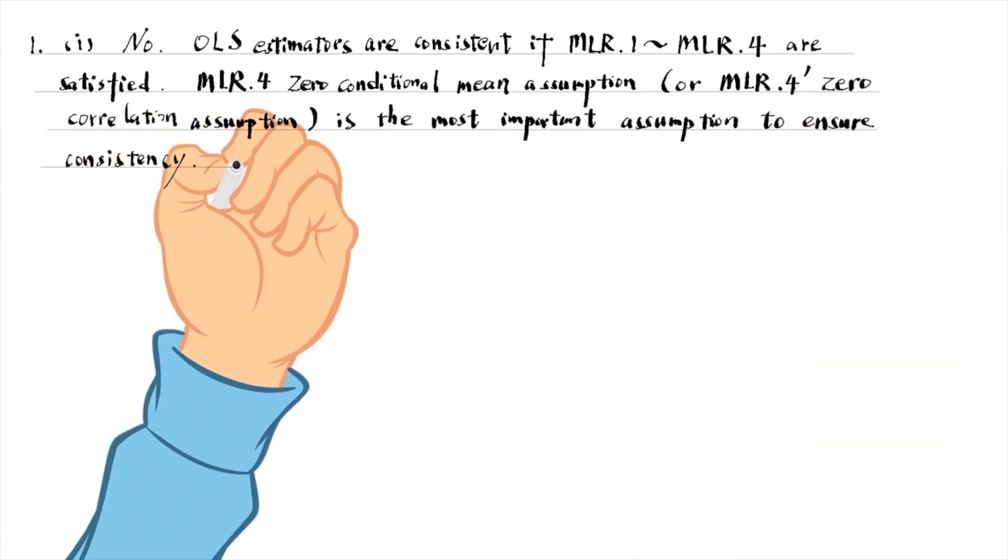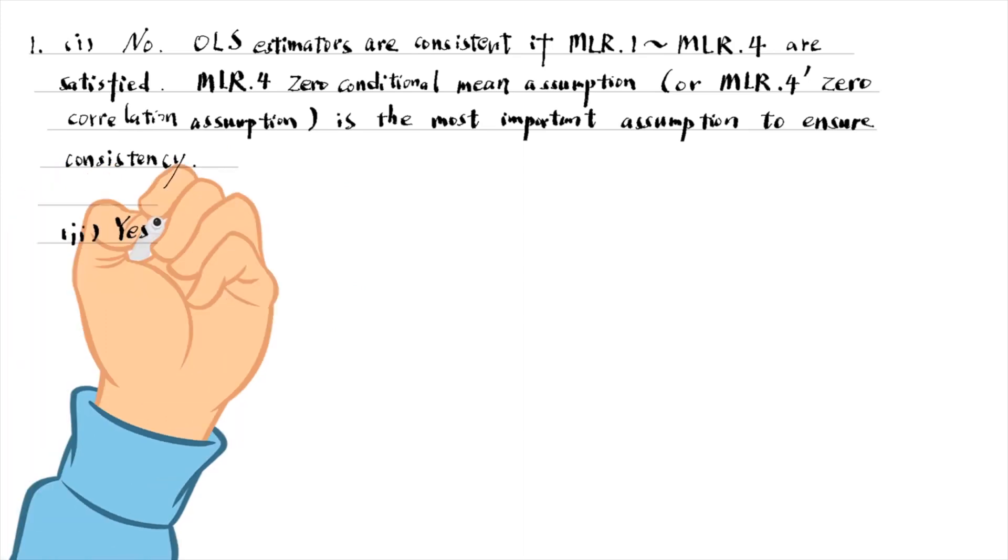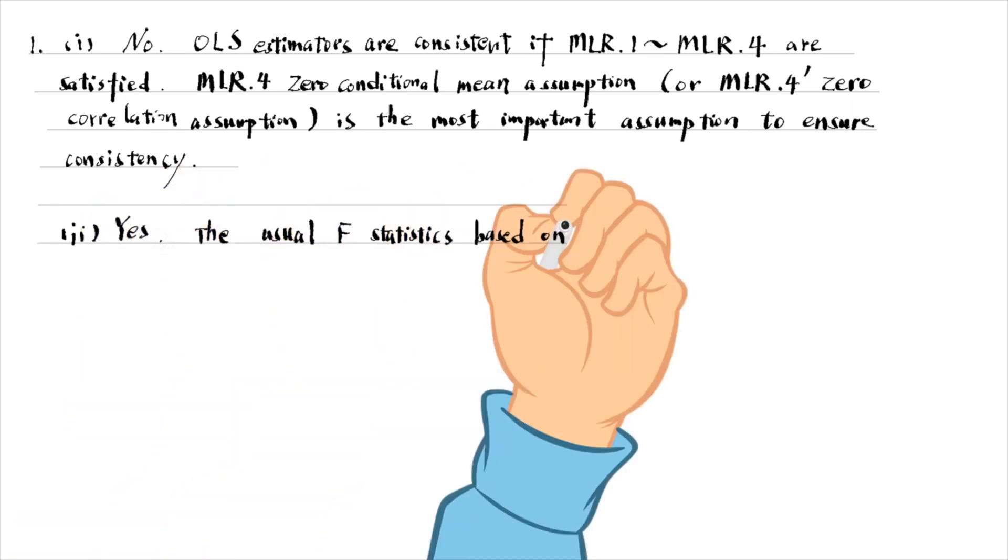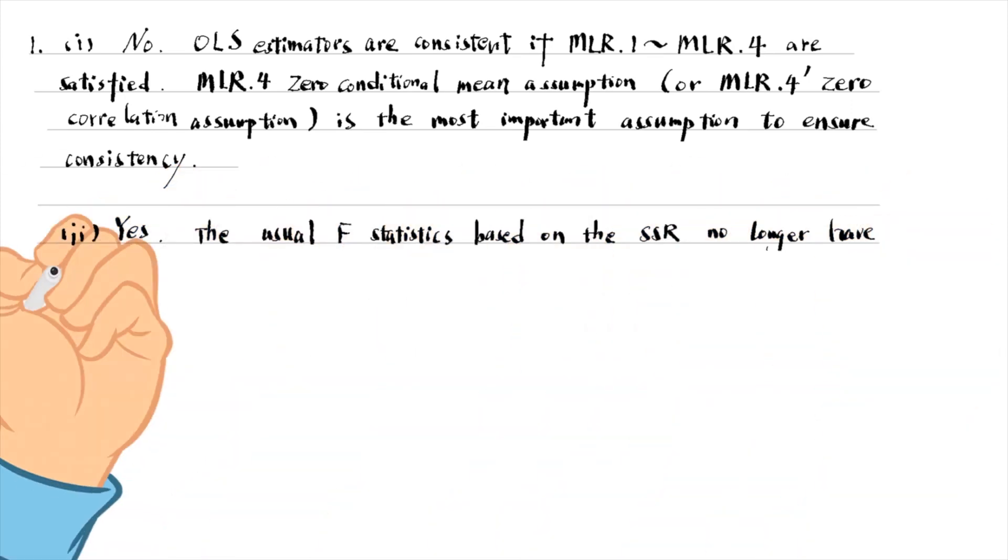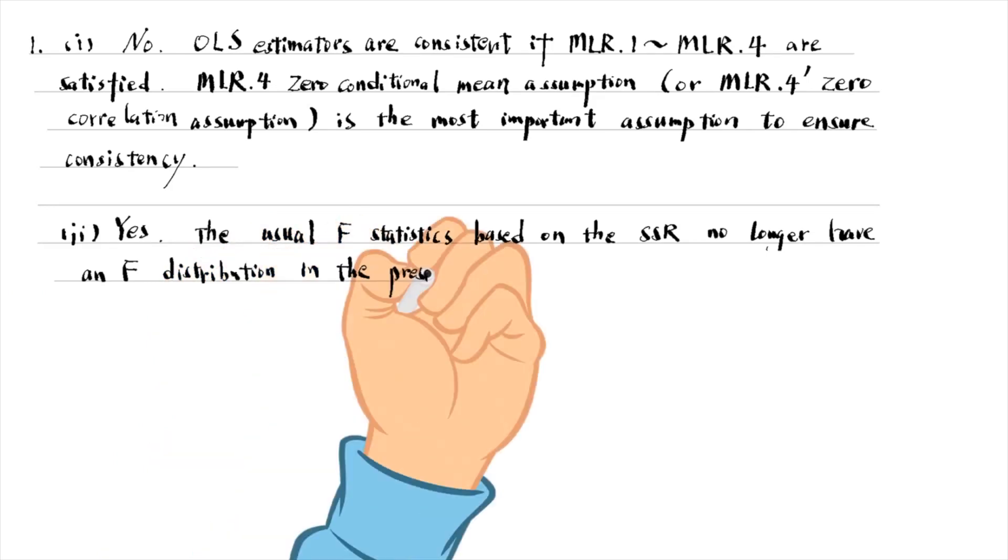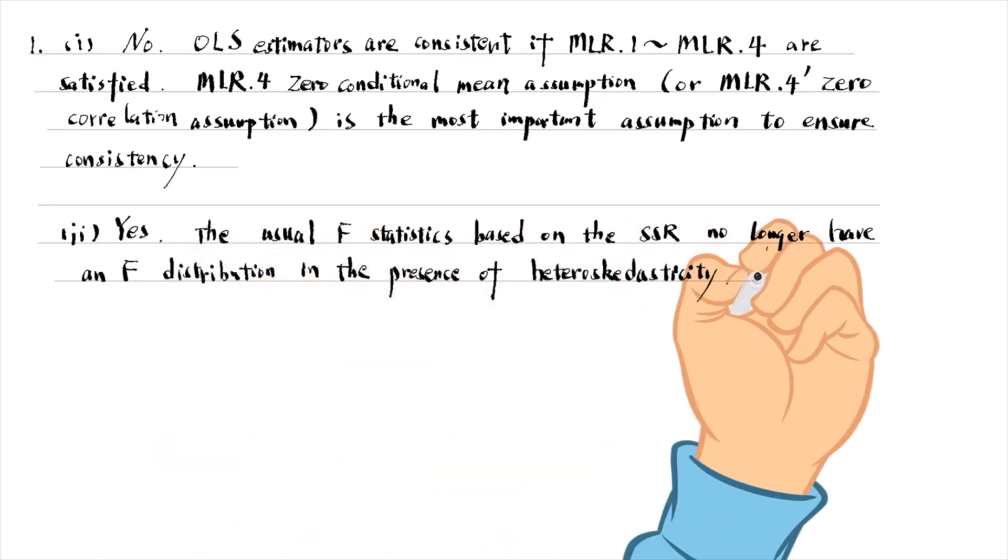For the second part, my answer is yes. It is the consequence of heteroscedasticity. The usual F-statistics, based on the sum of squared residuals, no longer have an F-distribution in the presence of heteroscedasticity.